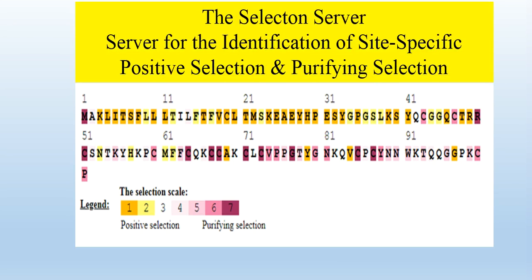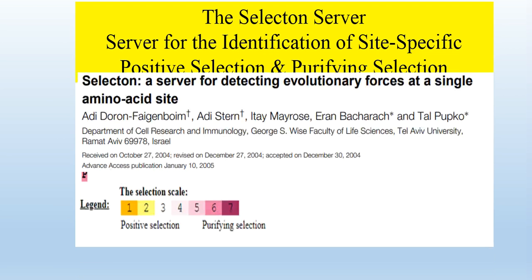Selectons is the server for the identification of site-specific positive selection and purifying selection. To know more about the Selectons process and the identification of site-specific positive or purifying selection, you must consider the manuscript 'Selectons server for detecting evolutionary forces at a single amino acid site.' You will get more information about this server in that paper.